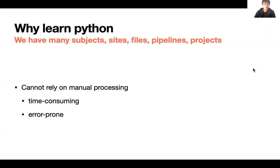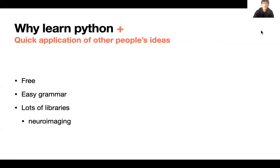Manual processing is not only time-consuming, but it's also error-prone. If you are doing one pipeline manually for all the projects, you'd be making mistakes — giving wrong inputs at some point. So we can automate this using Python. Since Python is free, easy, and has loads of libraries including neuroimaging, clever people share their ideas in Python and publish them online, and using Python we can apply them quickly.